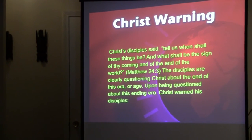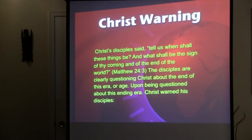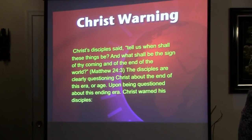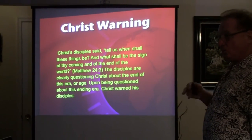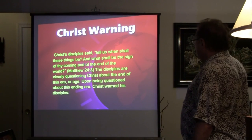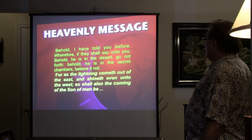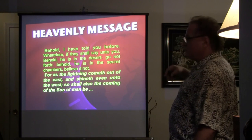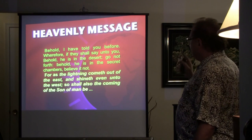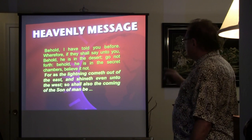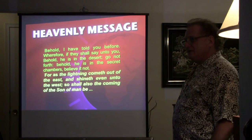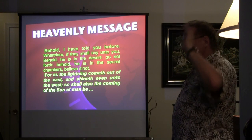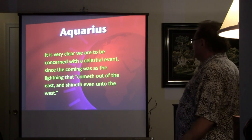Christ's disciples said to them, he said, Tell us when shall these things be? And what shall be the sign of thy coming and the end of the world? And the disciples are clearly questioning Christ about the end of this era or age. Remember I told you it wasn't world. They translated that as world. It was age they were asking. Aeon. Christ warned his disciples. He said, Behold, I have told you before. Wherever they say unto you, Behold, he is in the desert. Go not forth. Behold, he is in the secret chambers. Believe it not. For as the lightning that cometh out of the east and it shineth even unto the west, so shall also the coming of the Son of Man be. In other words, it's a little celestial event. It has a lightning up there. You can see it from the east to the west. That's what he's referring to. It's very clear we're concerned of a celestial event.